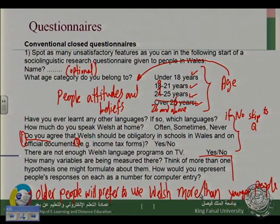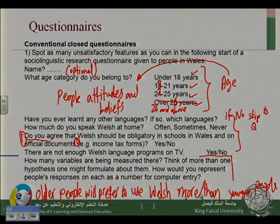How would you represent people's responses on each as a number for computer entry? We are going to talk about this later, but just to give you a quick answer: you will count how many people say yes or no, how many people say often, sometimes, and never. Then from the computer you can generate graphs and columns to represent these numbers. We will have an example in the next lecture.